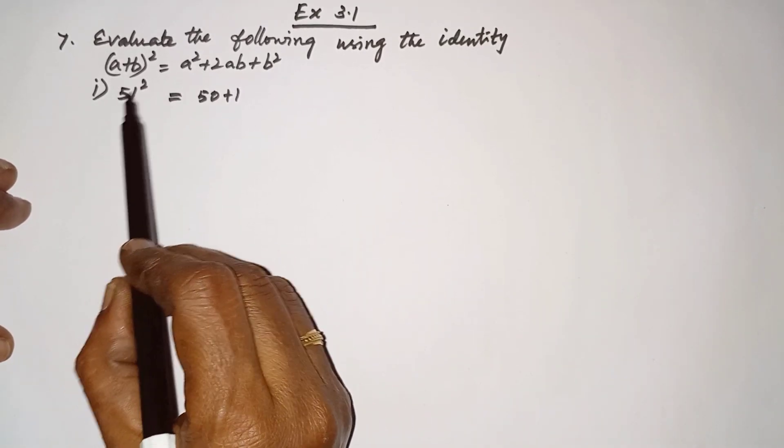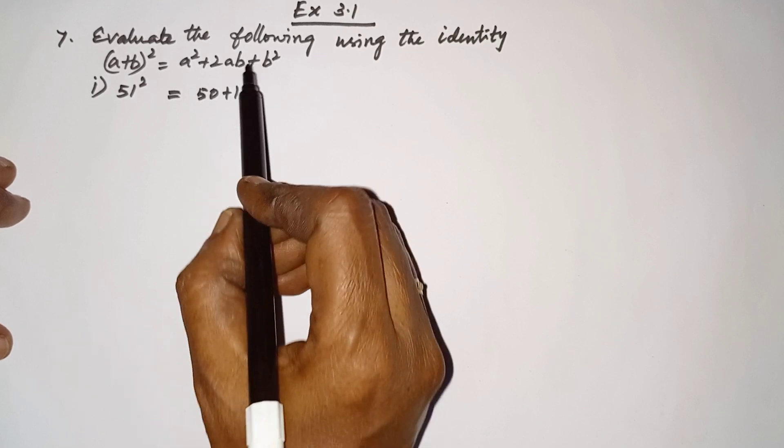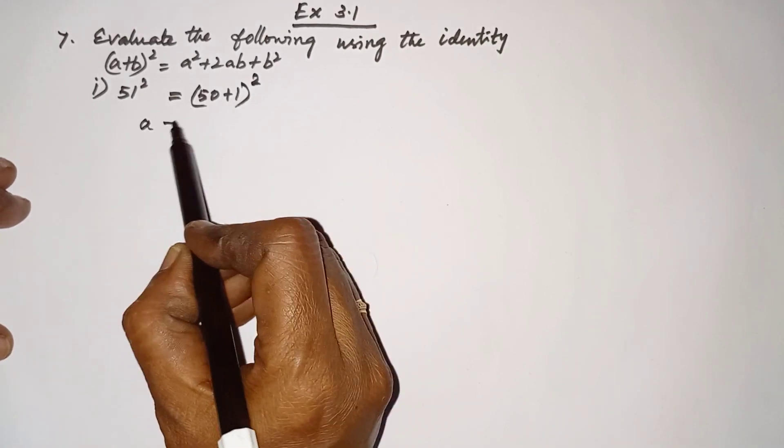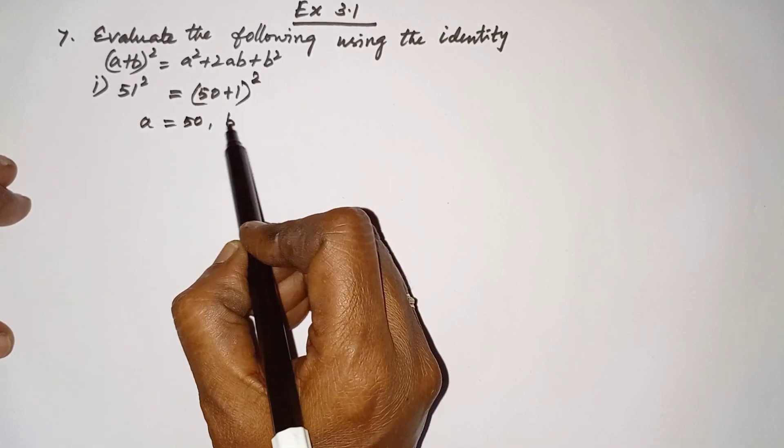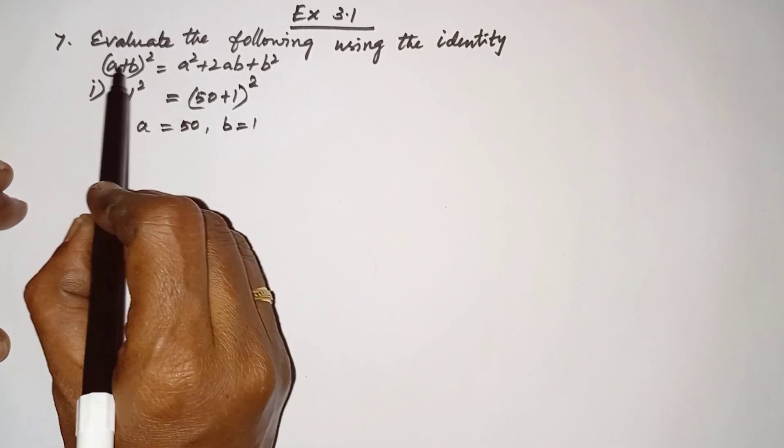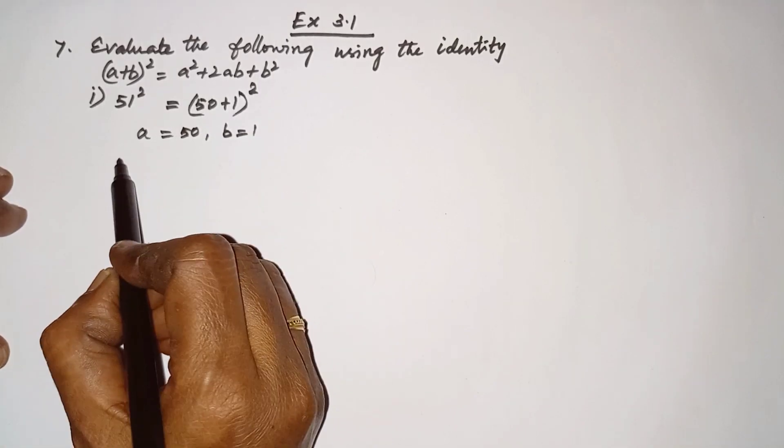51² is equal to (50 + 1)². Here a = 50, then b = 1. Now we have to substitute these two values in this identity, so (50 + 1)²...